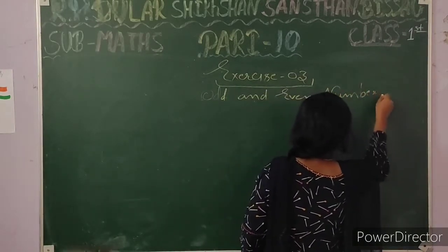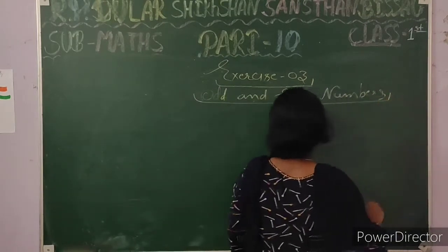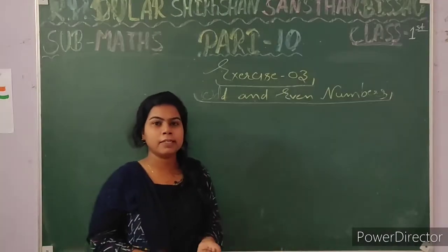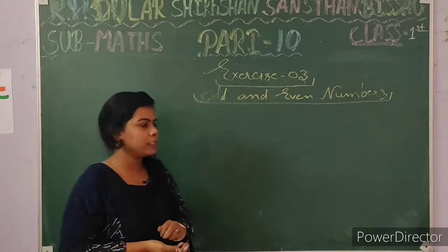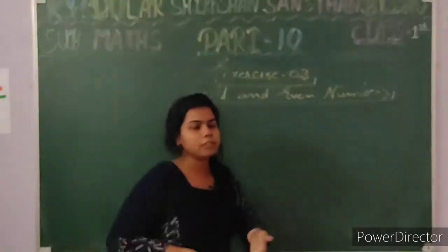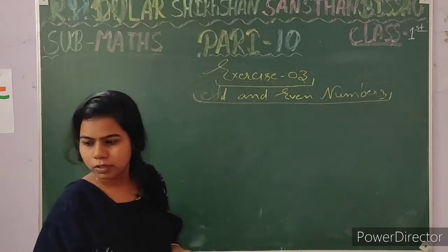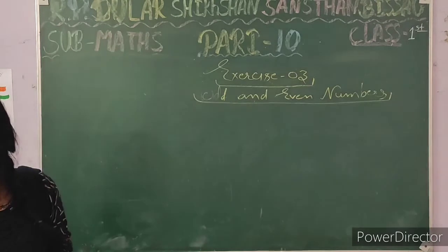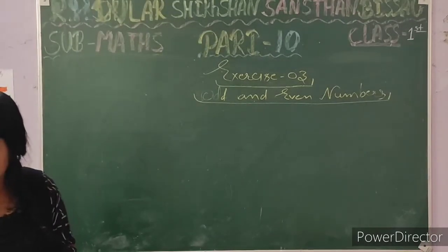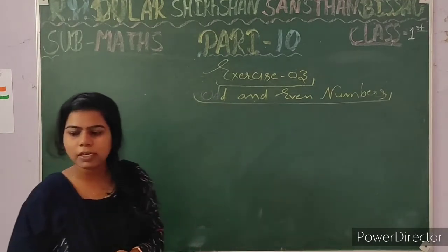Students, in today's class I will tell you about Exercise 3. We have 3 questions in Exercise 3. The first one is like we write the even numbers — odd numbers in yellow and even numbers in green.